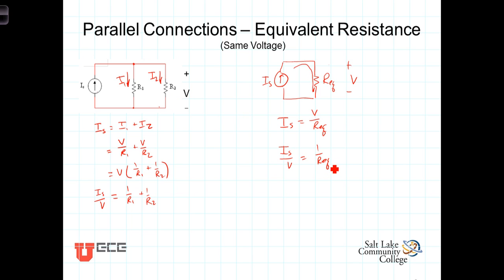And now for these to be equivalent, then this sum 1 over R1 plus 1 over R2 would equal 1 over R equivalent. Or our parallel relationship: 1 over R equivalent is equal to 1 over R1 plus 1 over R2.